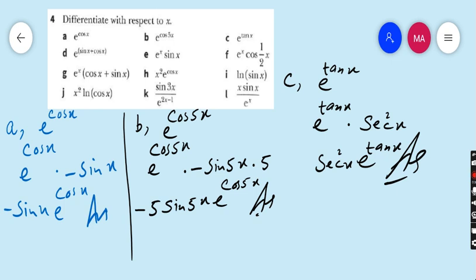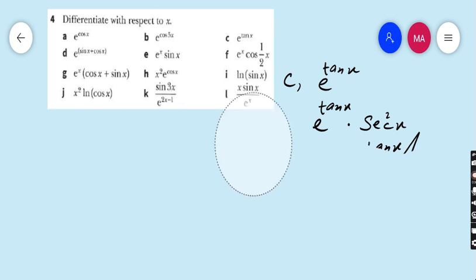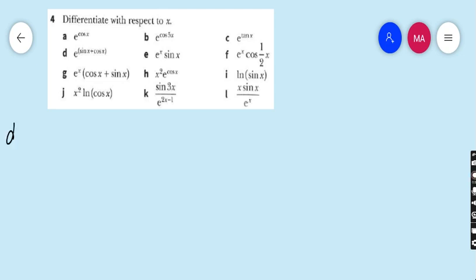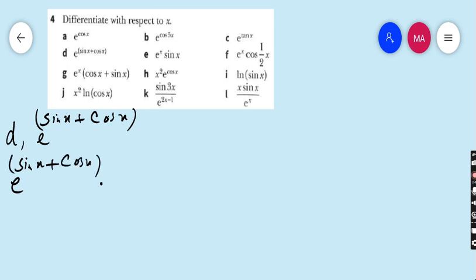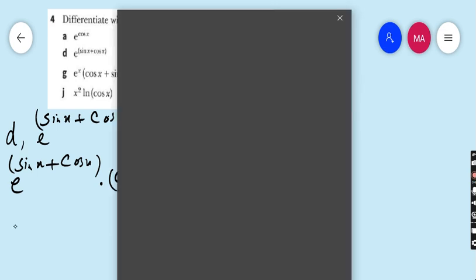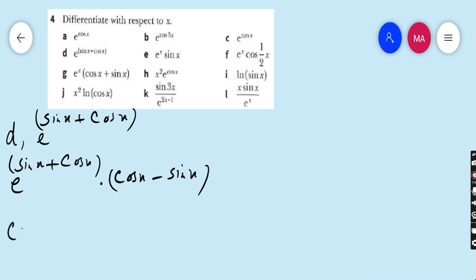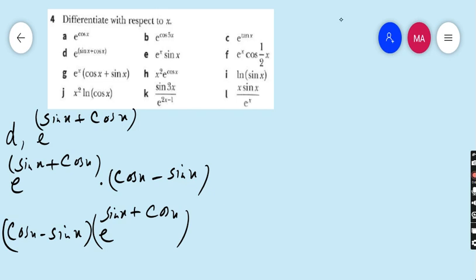Now move to part D. Part D is e^(sin x + cos x). Its derivative is e^(sin x + cos x) multiplied by the derivative of sin x + cos x. The derivative of sin x is cos x and the derivative of cos x is minus sin x. Hence our final answer is (cos x − sin x) · e^(sin x + cos x).